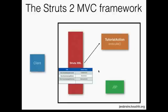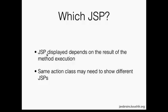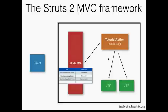So there are three different JSPs that you would want this tutorial action to possibly redirect to. In one request it's going to be just one JSP, but there are three different conditions and the execute method could redirect to three different JSPs. The JSP displayed depends on the result of the method execution, and the same class may need to show different JSPs depending on different conditions.